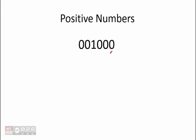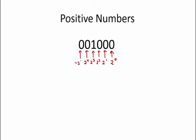If we look at the number 001000, the way that we determine the value of this 2's complement number is as follows. Each bit represents a power of 2, with the rightmost bit representing 2 to the power 0, the next bit is 2 to the power 1, then 2 squared, 2 cubed, 2 to the 4th, and finally negative 2 to the 5th.